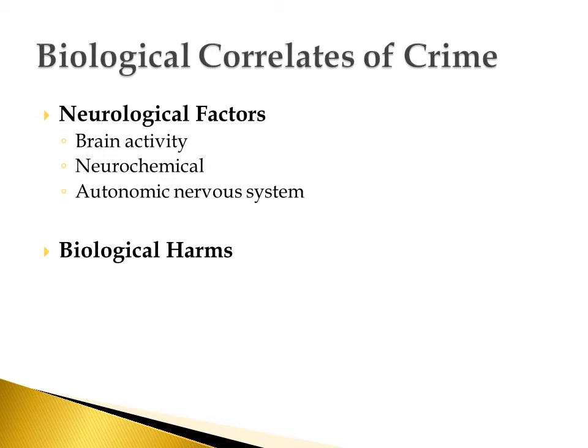We're also going to talk today about some of the biological harms that people have identified as being potentially causal in leading people to commit crime. The three basic ones that people have talked about — and really the main one we're going to discuss today — are the perinatal harms. These are risk factors that occur at or around the time of a person's birth.